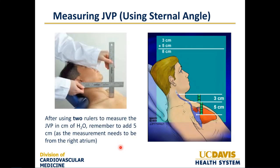In terms of measuring jugular venous pressure using the sternal angle — the angle of Louis — position a ruler vertically from the sternal angle, then place another ruler horizontally at the meniscus of the jugular venous pressure. The height of the vertical ruler in centimeters of water is the jugular venous pressure. Remember, measurement is actually from the right atrium, and in general from the right atrium to the angle of Louis is five centimeters. So if the measurement from the sternal angle is three centimeters, adding five gives an actual jugular venous pressure of eight centimeters of water.